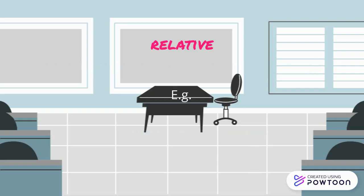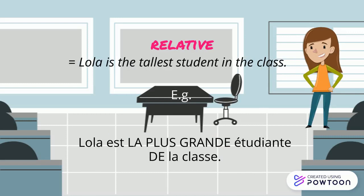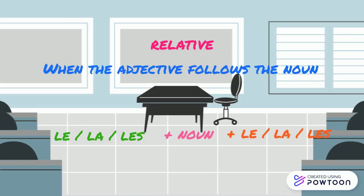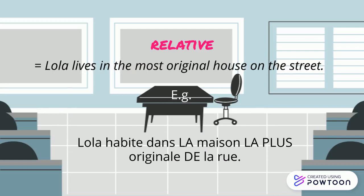For instance, 'Lola est la plus grande étudiante de la classe' — Lola is the tallest student in the class. When the adjective follows the noun, the structure is: definite article + noun + definite article + adjective + de. For example, 'Lola habite dans la maison la plus originale de la rue' — Lola lives in the most original house on the street.